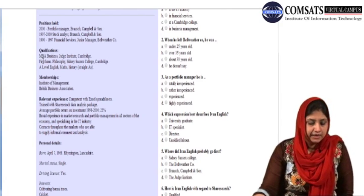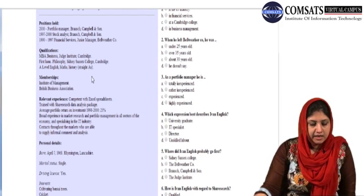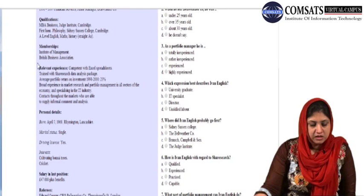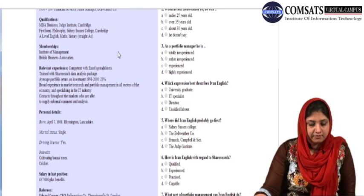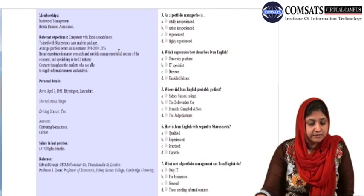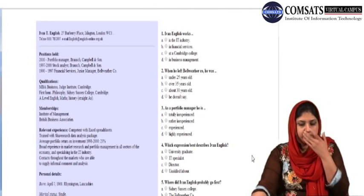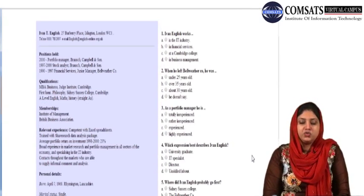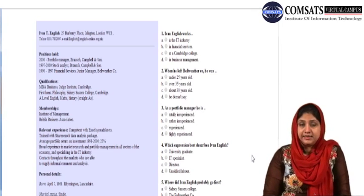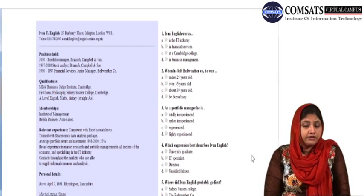Look at membership: Institute of Management, British Business Association. Relevant experience: competent with Excel spreadsheets. Personal details: marital status single, driving license yes, interests: cultivating bonsai trees and cricket. Salary and referees. Now look at the questions. The very first question is: Ivan English works in the IT industry, in financial services, at a Cambridge college, or in business management? Mark your answer.